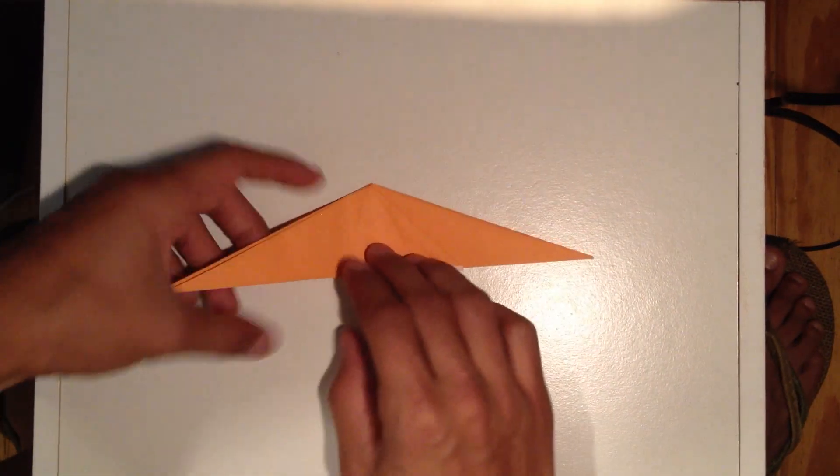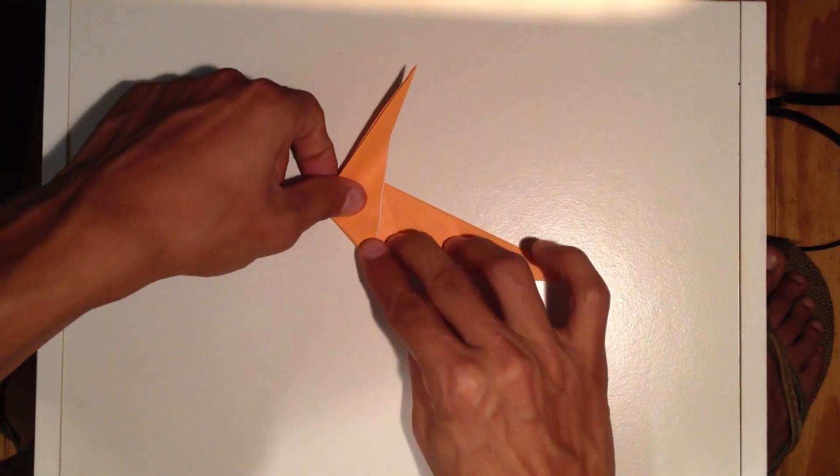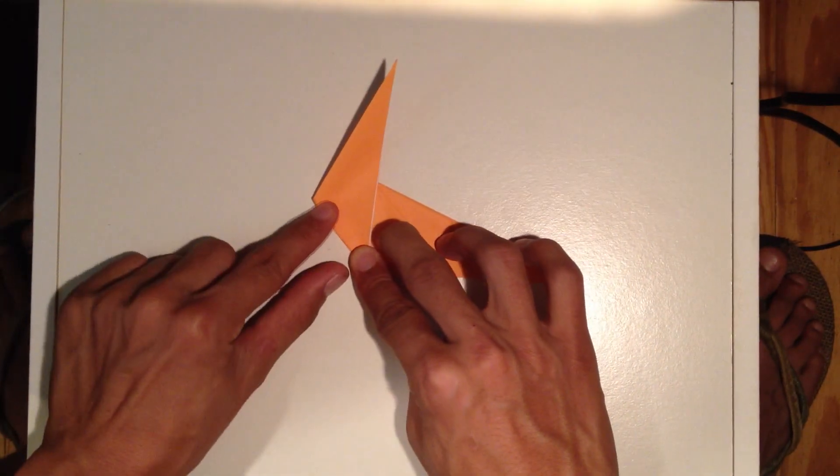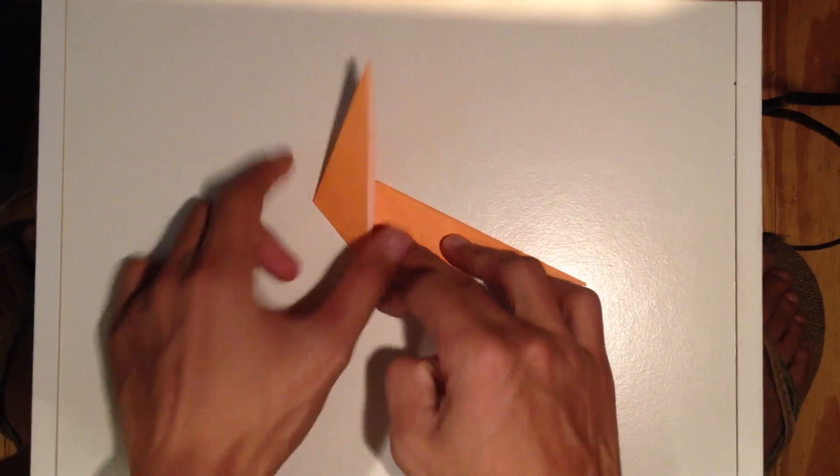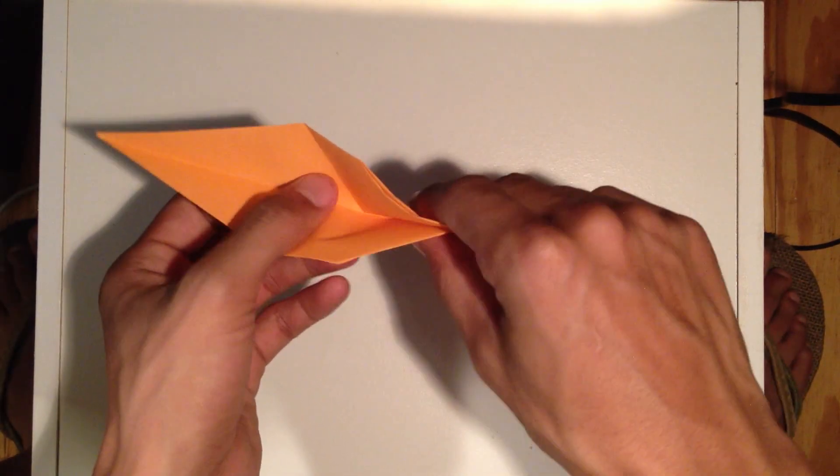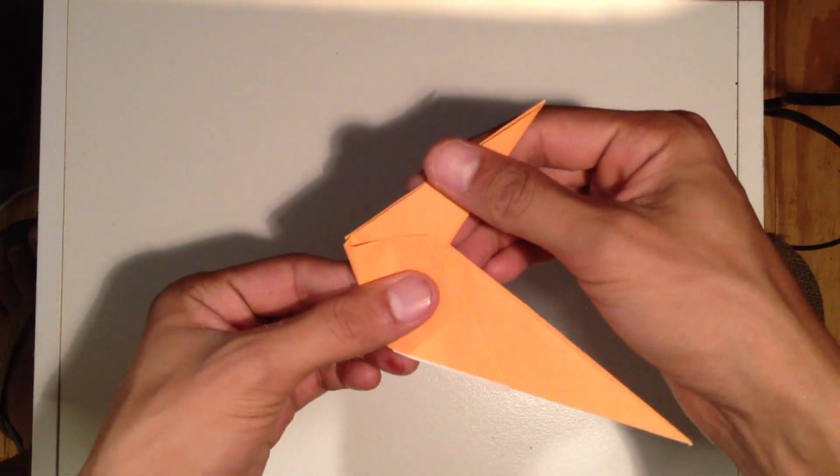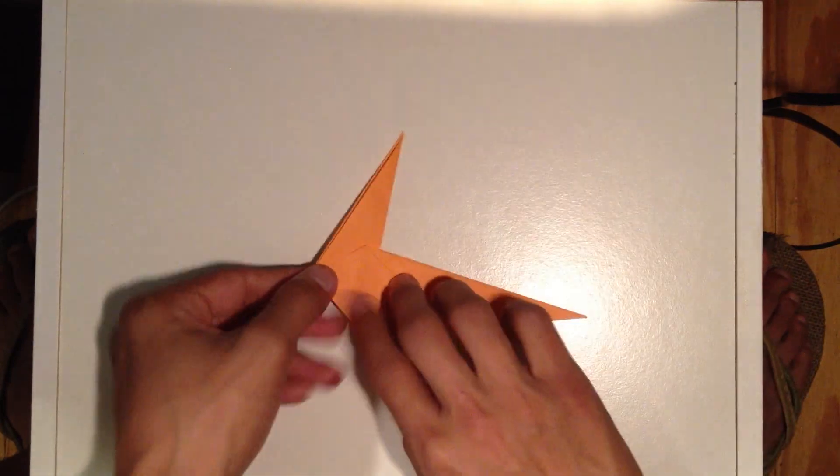So we got the flaps coming this way. We're going to take this and kind of fold it up, maybe a little more than halfway. This is going to make the neck, the structure for the neck. And then we're going to open this up like this, just a reverse fold, using that crease we've just created.